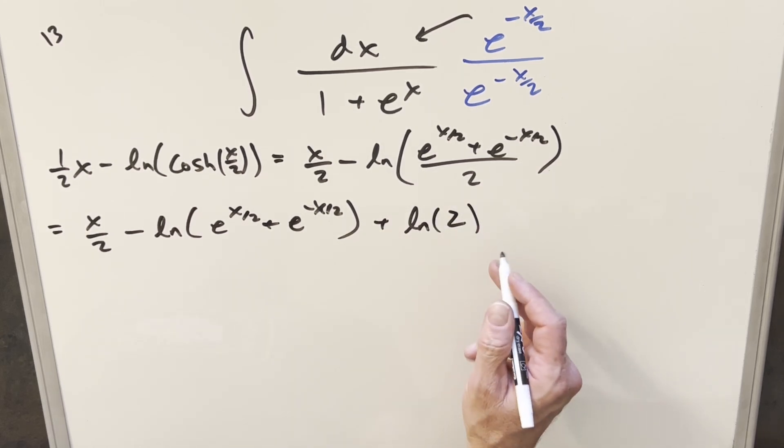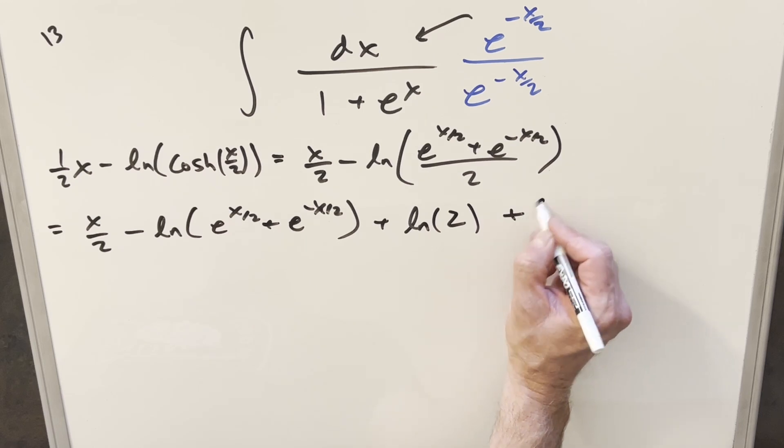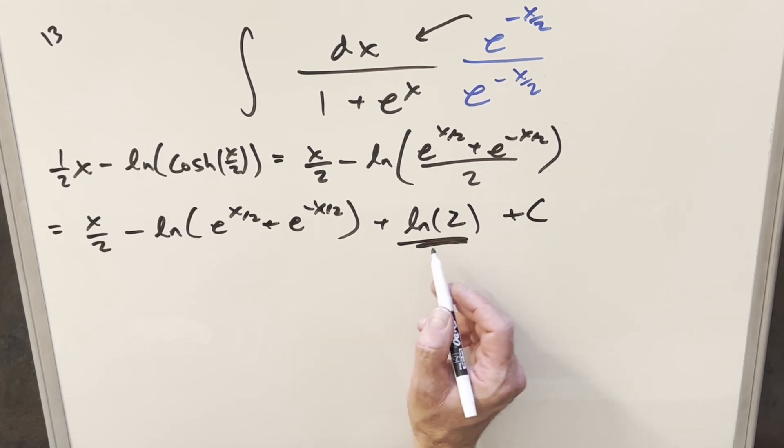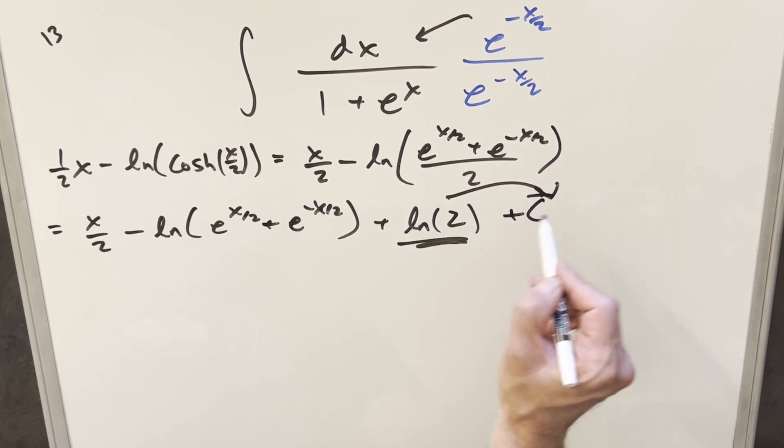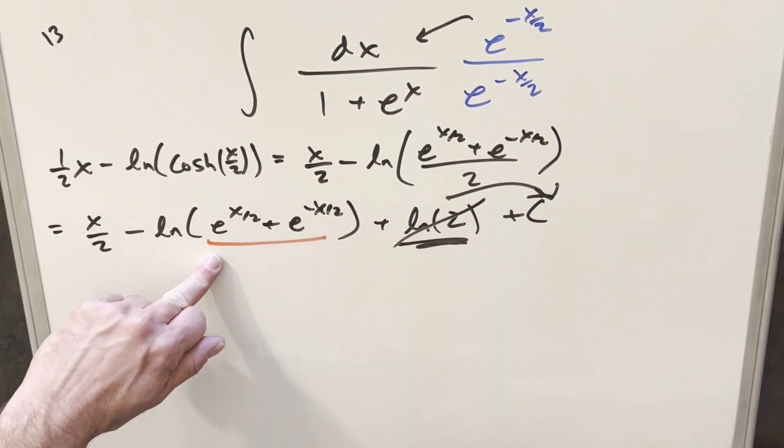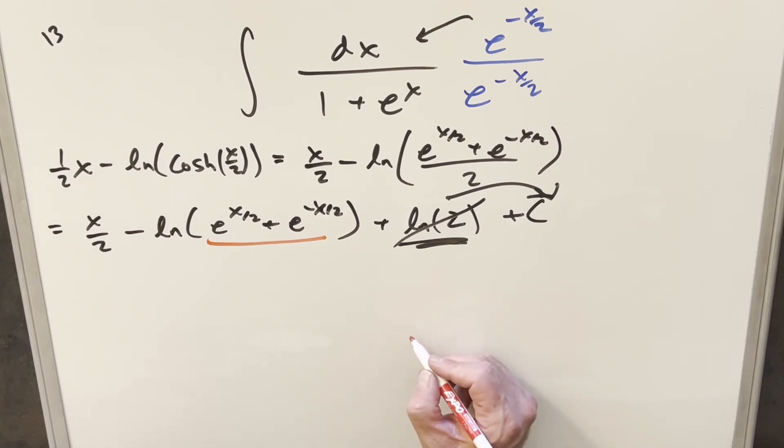But actually, I shouldn't have removed the plus c earlier, right? Because this right here is just a constant value. And what we can do is just kind of absorb it into the constant and ignore this natural log of 2. And from here, let's just focus on this and try to simplify this, get it back to single angles. And that's not going to be too difficult. We're going to do basically the same thing we did earlier in reverse.